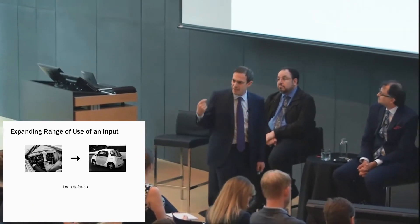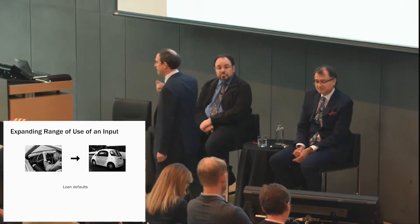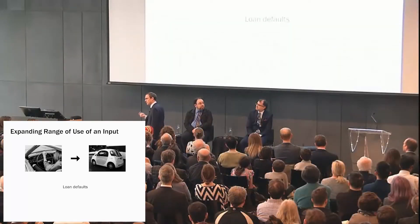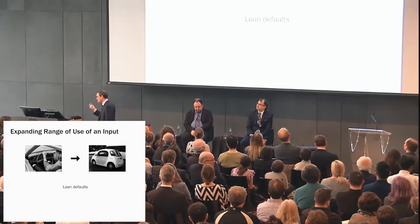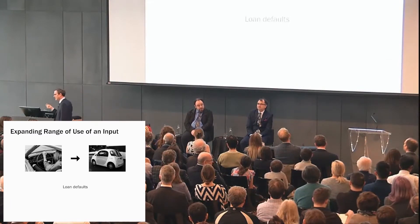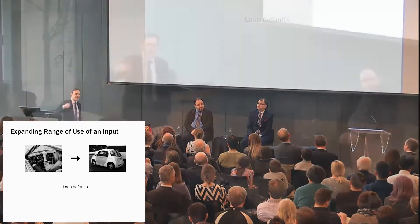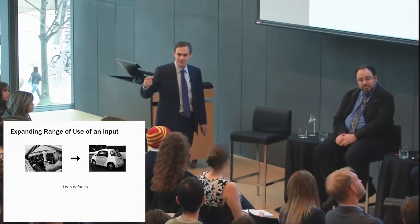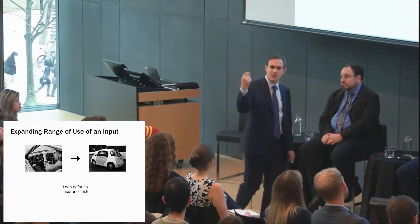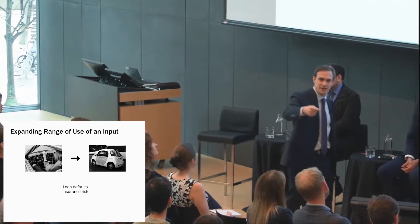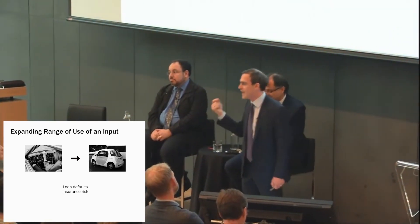The first applications for machine prediction were exactly the same as the first applications for human prediction — it's an old problem. You want to lend somebody money, you need to predict if they're going to pay you back. That's an old-fashioned prediction problem. And the first applications of machine prediction have been around loan defaults, or insurance risk — you need to know if somebody's going to make a claim in order to price your insurance and figure out whether to offer it to them.